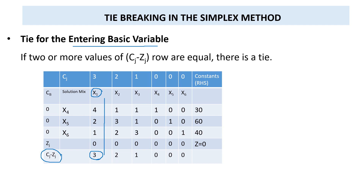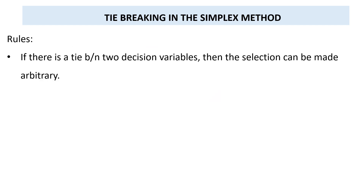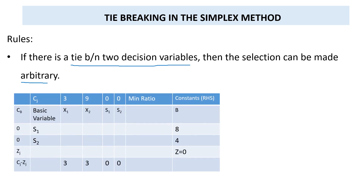But if two or more values of cj minus zj are equal, we call this a tie, and we have different rules to handle such situations. Rule number one: if there is a tie between two decision variables, the selection can be made arbitrarily. For example, if the maximum positive number in the cj minus zj row is 3 for both x1 and x2, we can choose either x1 or x2 as the entering variable.